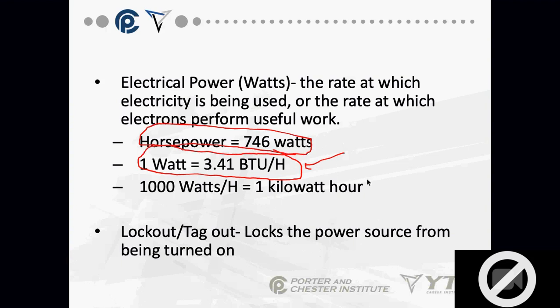One thousand watts per hour is one kilowatt — that's what your power company bills you on. Lockout/tagout prevents the power source from being turned on while you're working. You'll deal much more with this in the shops. Just make sure no one can turn the power source on while you're working — it's self-protection.